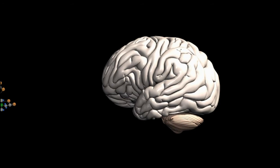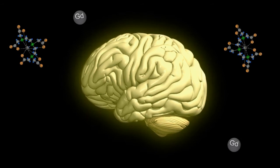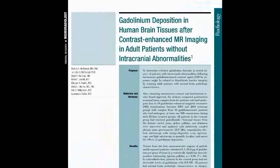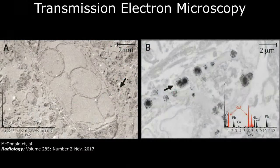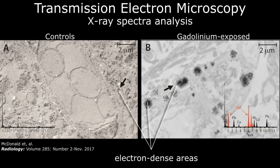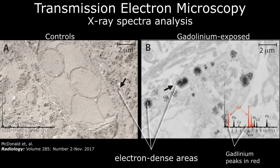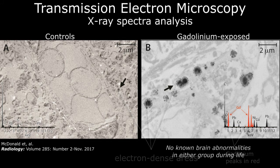However, in November 2017, McDonald et al reported on the post-mortem evaluation of brains of individuals who were known to have undergone multiple contrast enhanced MRI scans of the body during their life. Using transmission electron microscopy and x-ray spectra analysis, the researchers found a statistically significant increase in gadolinium deposition in patients with known multiple lifetime exposures to gadolinium contrast over controls despite the fact that neither group had any detectable brain abnormalities. These findings appear to negate the assumption that gadolinium agents could not cross the intact blood-brain barrier in otherwise normal patients.